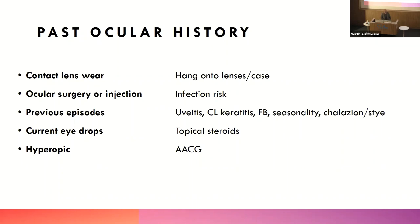If they've had recent surgery or injection into the eye, those are risk factors for endophthalmitis — infection of the whole eye, mostly from gram-positive bacteria, most often after injection or recent surgery. If it's a recurrent red eye, that's a clue to conditions including uveitis, which can be relapsing-remitting. Tradesmen will often have had previous foreign bodies. Seasonality relates to allergy. Anyone who's had a chalazion or stye may well have had one in the past — those tend to recur.